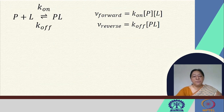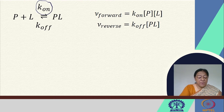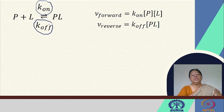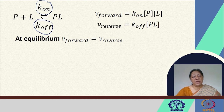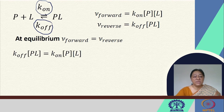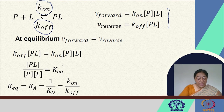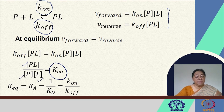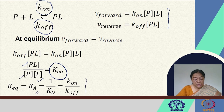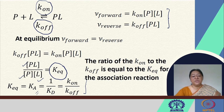Now that we have our equilibrium situation described by two rate constants, we need to reach equilibrium where the forward rate and the reverse rate are equal. Setting the forward and reverse rate expressions equal gives us the equilibrium concentration of the protein-ligand complex, from which we obtain the association constant Ka and its inverse, the dissociation constant KD, as the ratio of Koff to Kon.